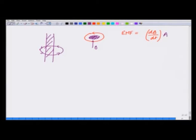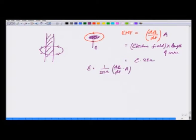So I will just put that area in purple. This I could also write as electric field on that wire times length of the wire, which is E times 2 pi r. So E comes out to be 1 over 2 pi r times dB/dt times area.